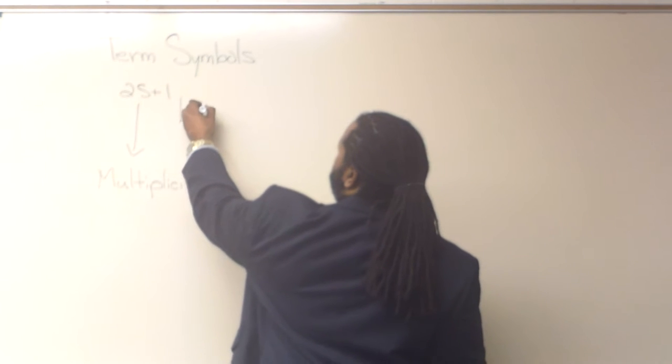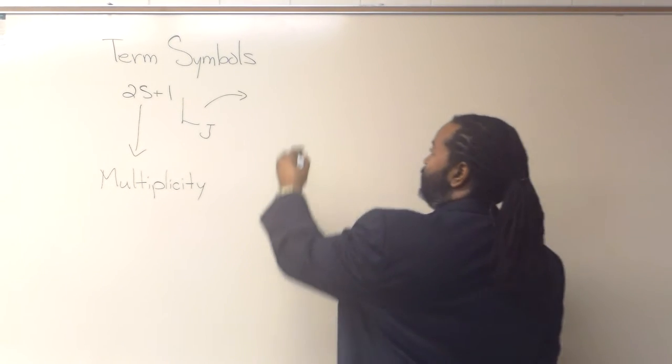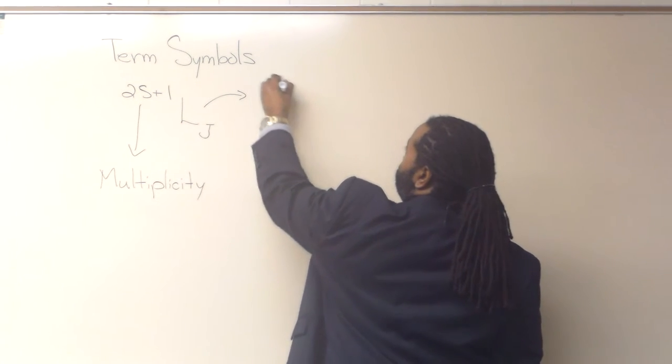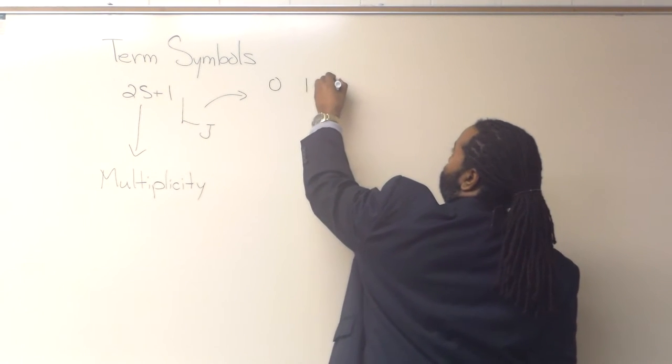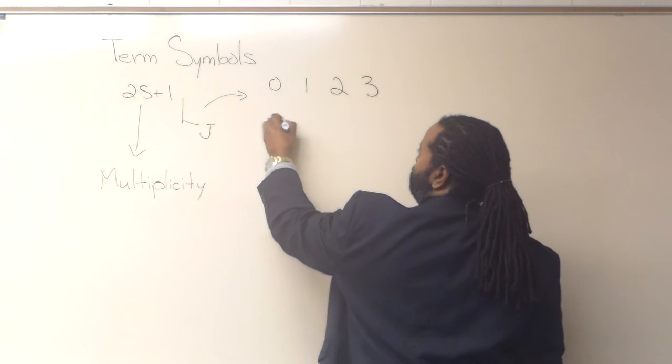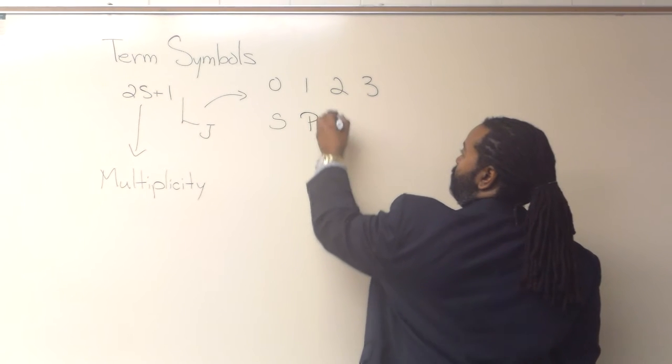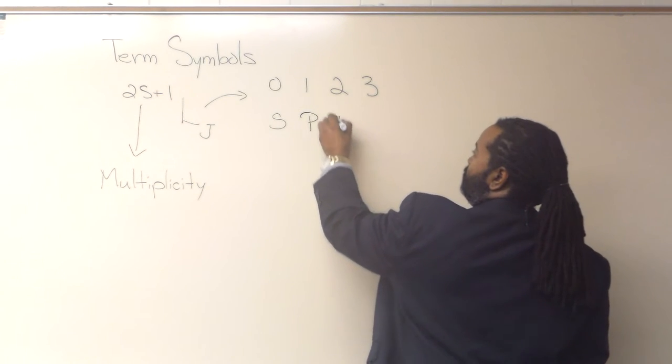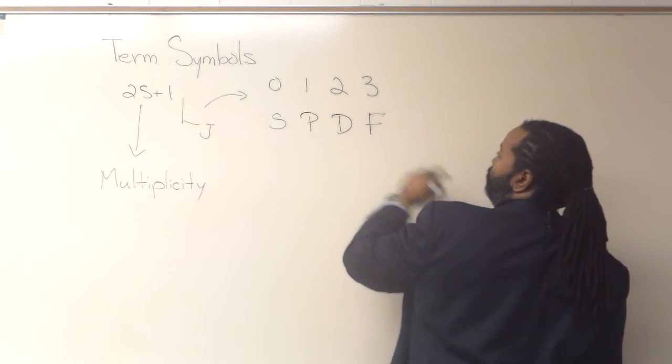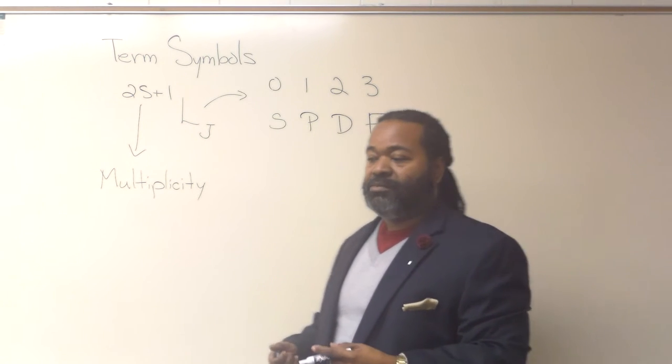The part with the L is actually read as a letter, and it's similar to what we do with the quantum numbers. Where zero is s, just like the s orbital. One is p, just like the p orbital. And the L value of two is d. Three is f. And it continues on just like with the quantum numbers.